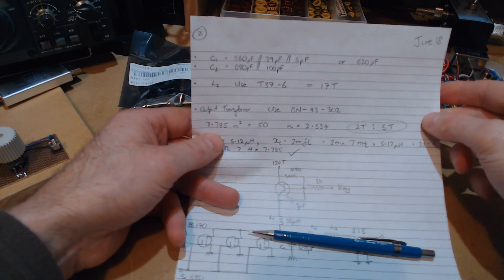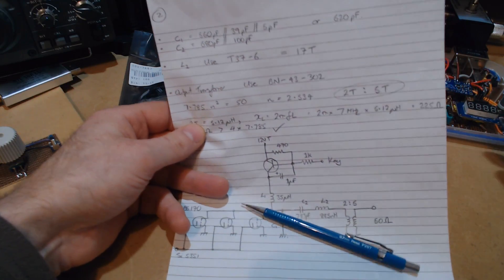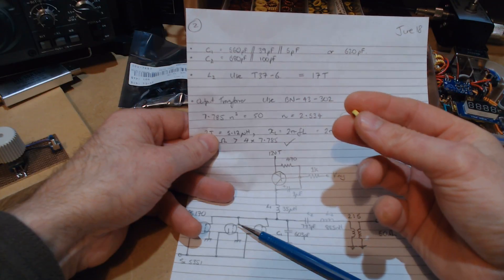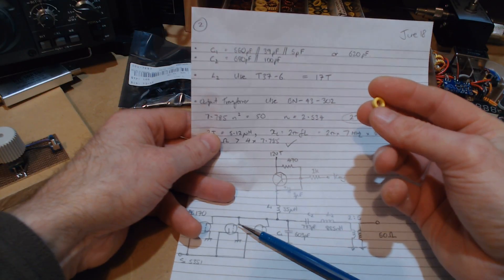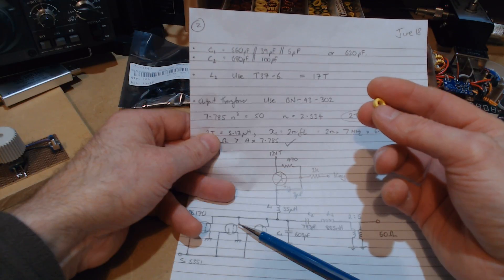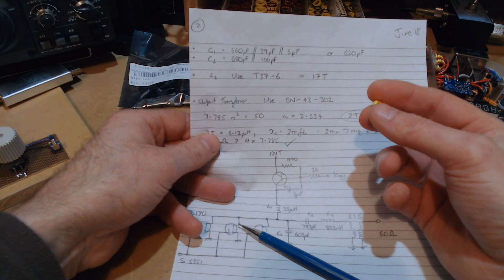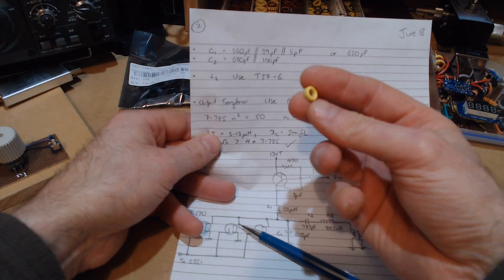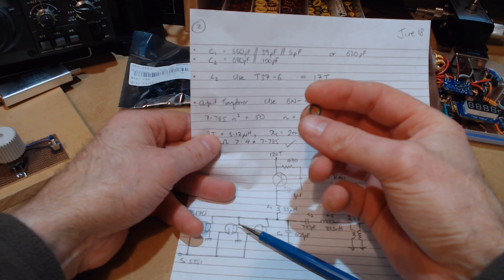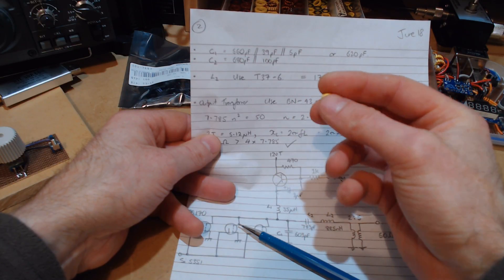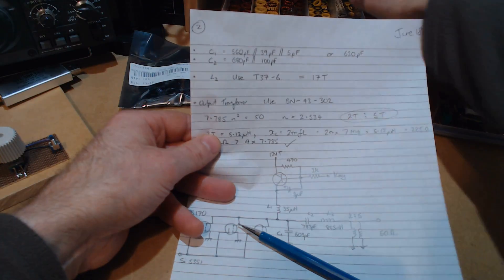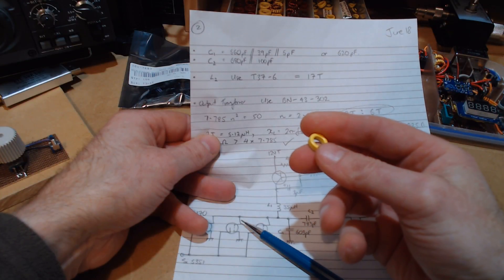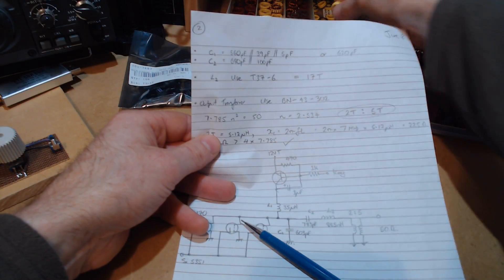Now for L2, that second inductor, I'm going to use a T37-6. That's good for 3 to 40 megahertz. So to get our value of 885 nanohenries works out to be 17 turns. So we'll use 17 turns on that to give that value there. If that's too tight then I'll look to go to probably this one here and go up to that size there, which is the next size up, T50-6.